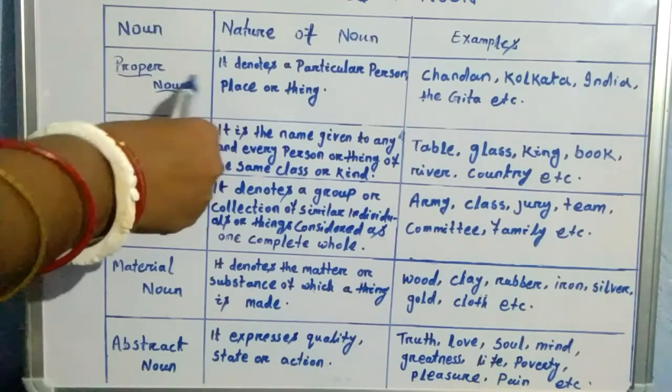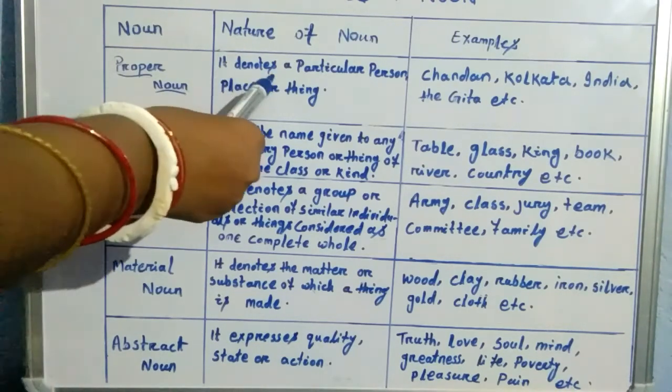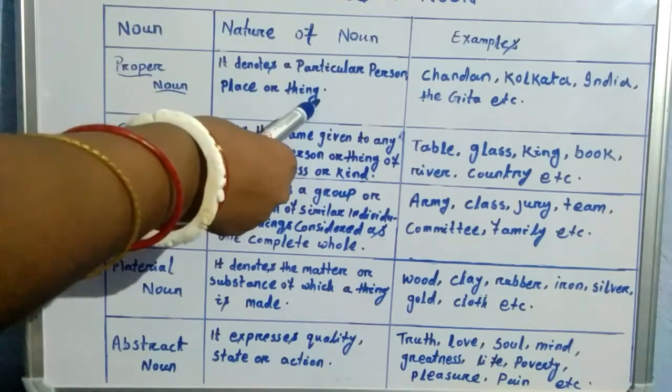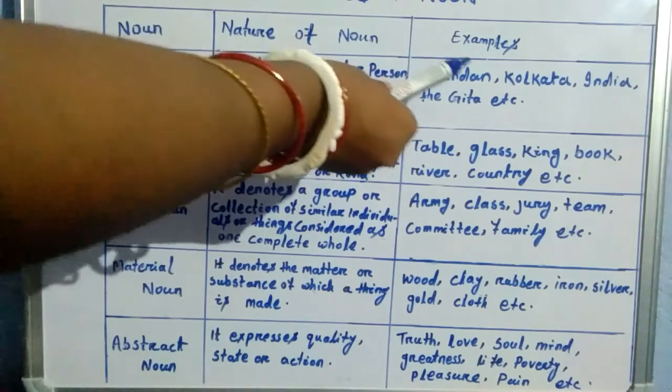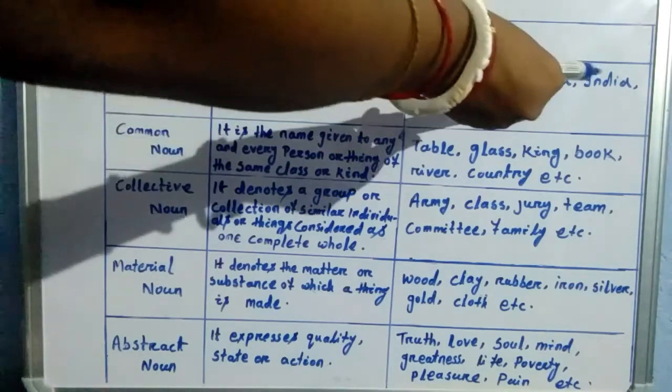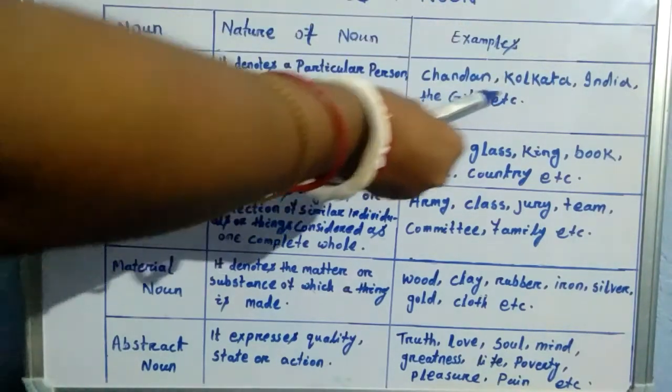And what is proper noun? It denotes a particular person, place or thing. And the examples are Chandan, Kolkata, India, the Gita, etc.